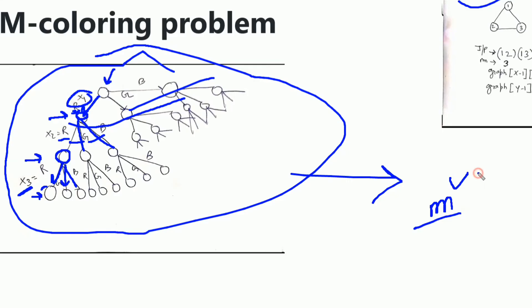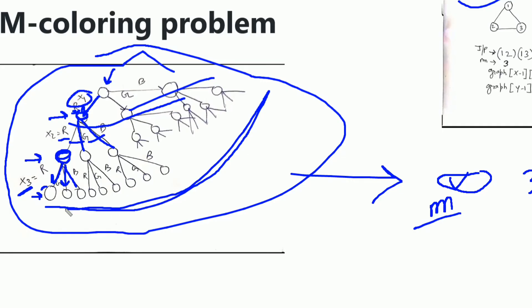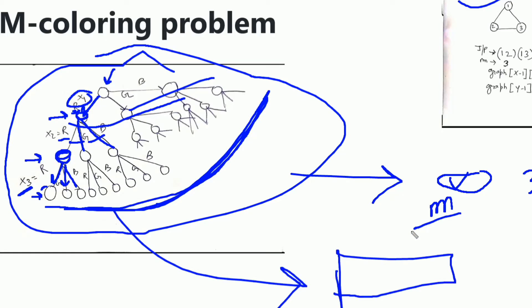The time complexity of the naive approach is M to the power V, where M is the number of colors and V is the number of vertices. With three colors and three vertices, that is 3³ = 27 total combinations. After generating all 27 combinations, we iterate through them and check validity — a combination is valid if no two adjacent vertices share the same color. This is the naive approach.